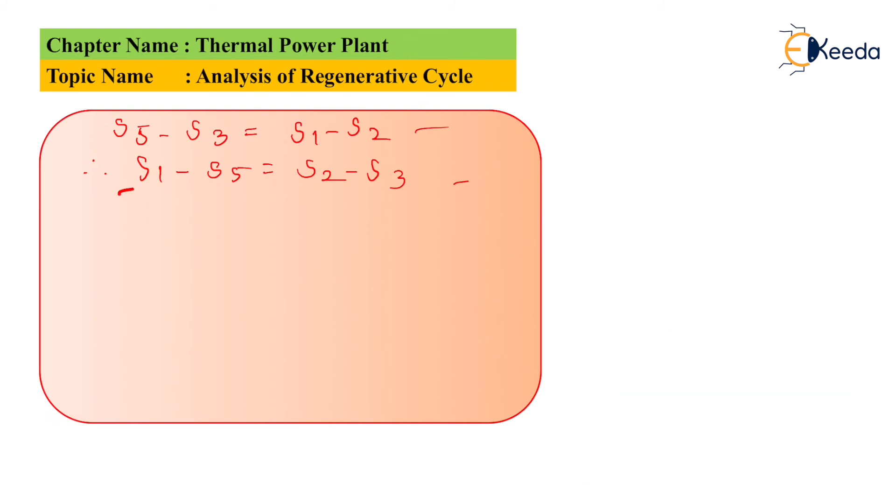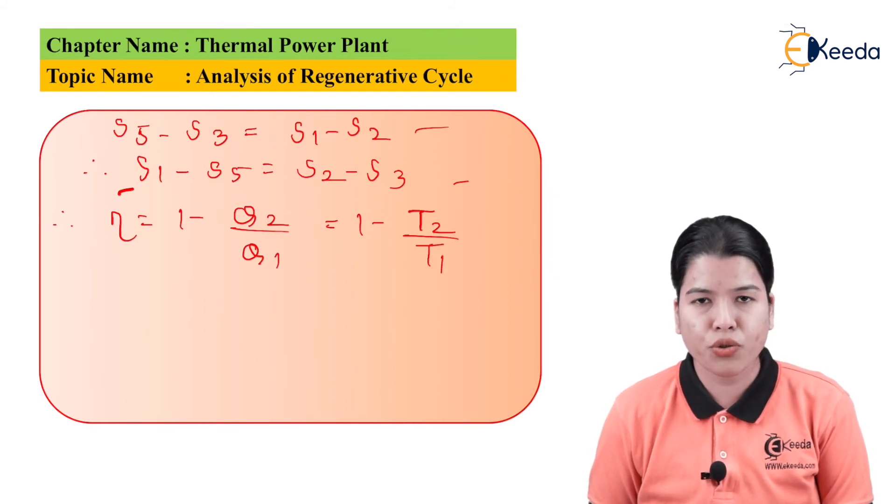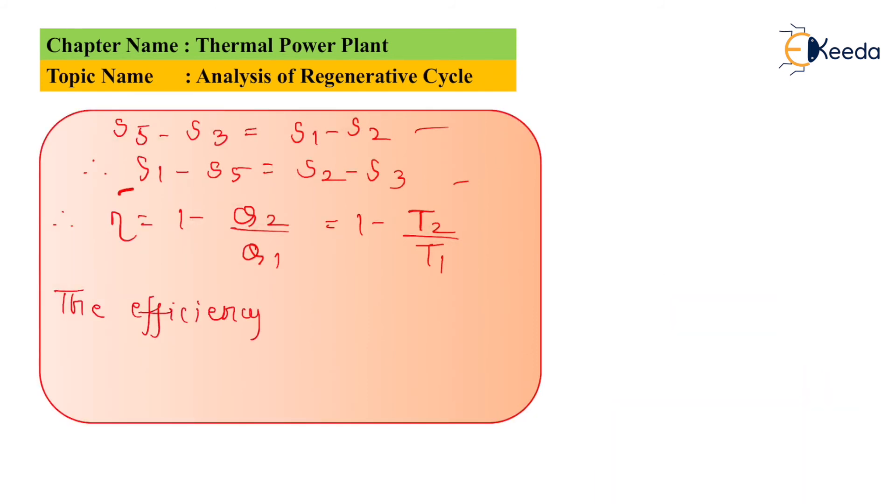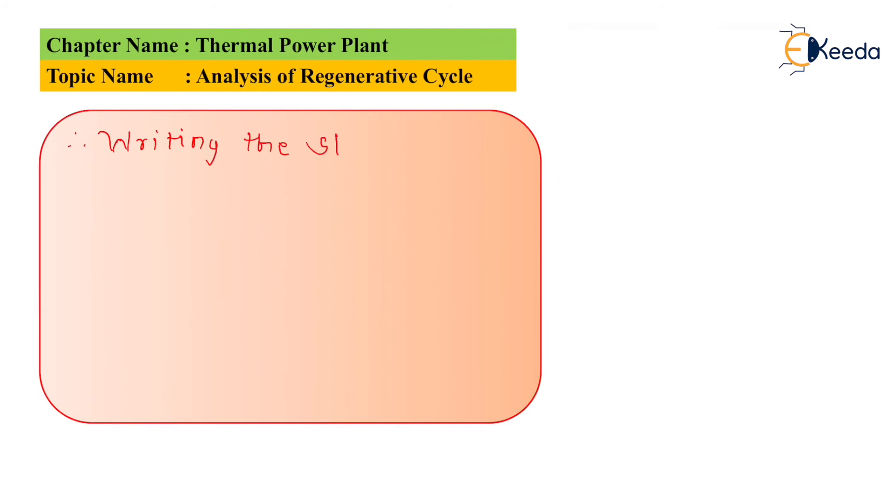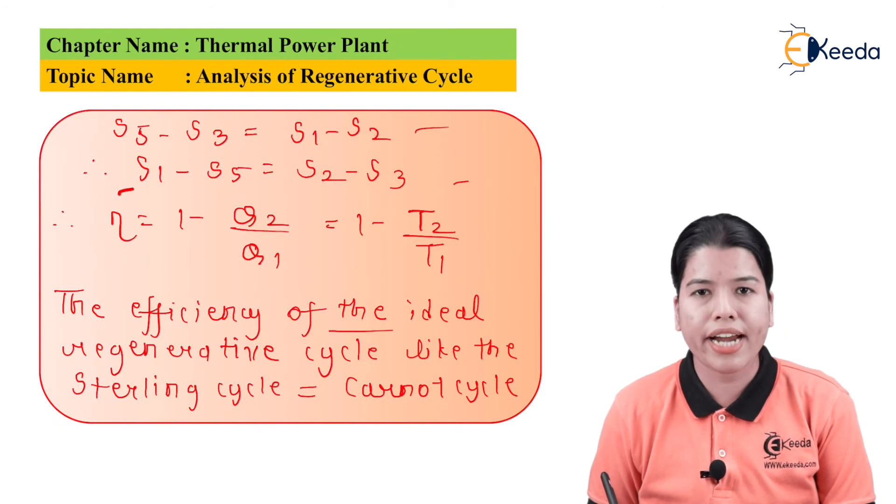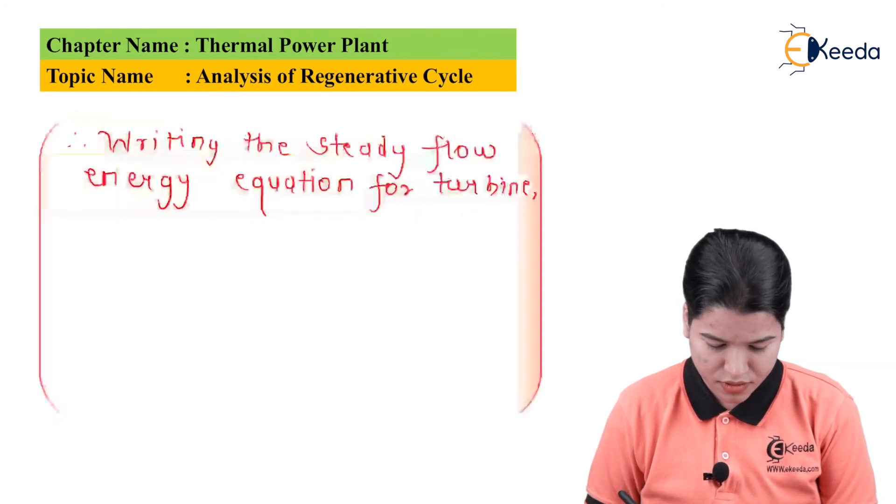The efficiency can be calculated as: Efficiency equals 1 minus Q2 divided by Q1, which is also equal to 1 minus T2 divided by T1. We can say that the efficiency of the ideal regenerative cycle is like the Stirling cycle, which is equal to the Carnot cycle.